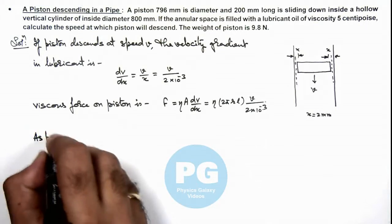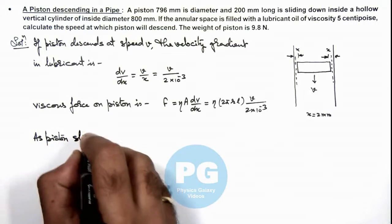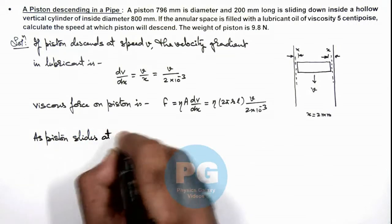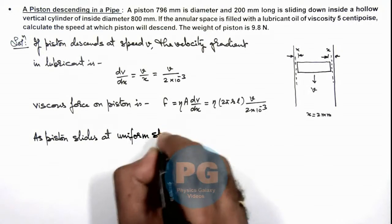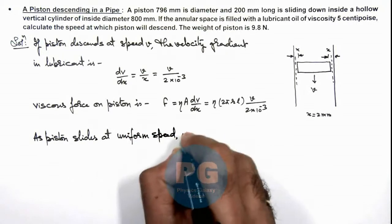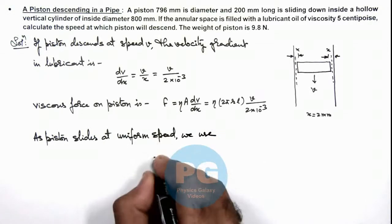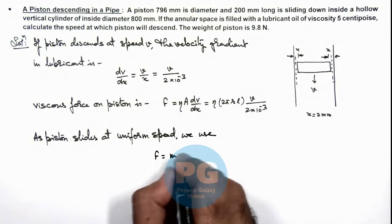And we can write as piston slides at uniform speed. In this situation, we use that the viscous force is equal to the weight of this piston.